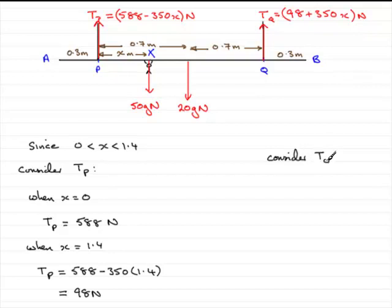Now again, x can vary from 0 to 1.4, so we'll put the two extremes in. When x equals 0, the tension in Q equals 98 plus 350 times 0, which simply comes out to 98 newtons.